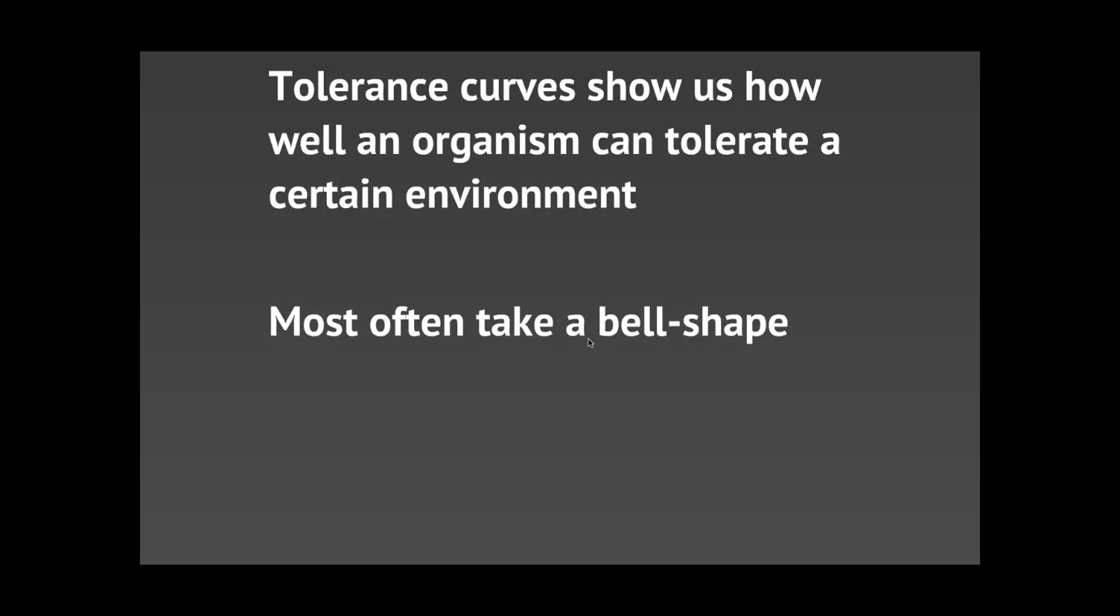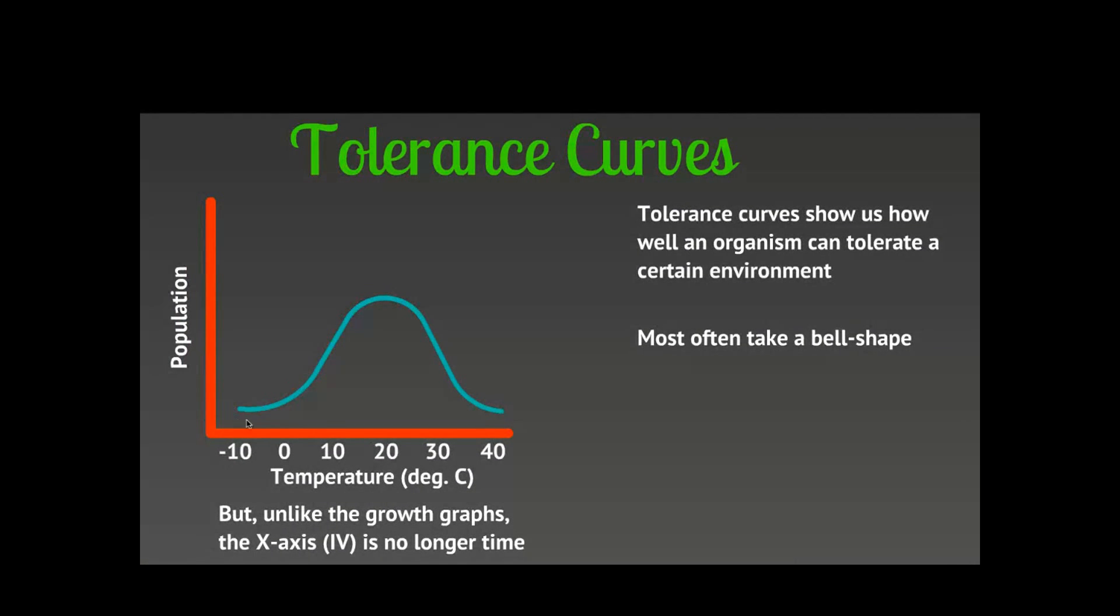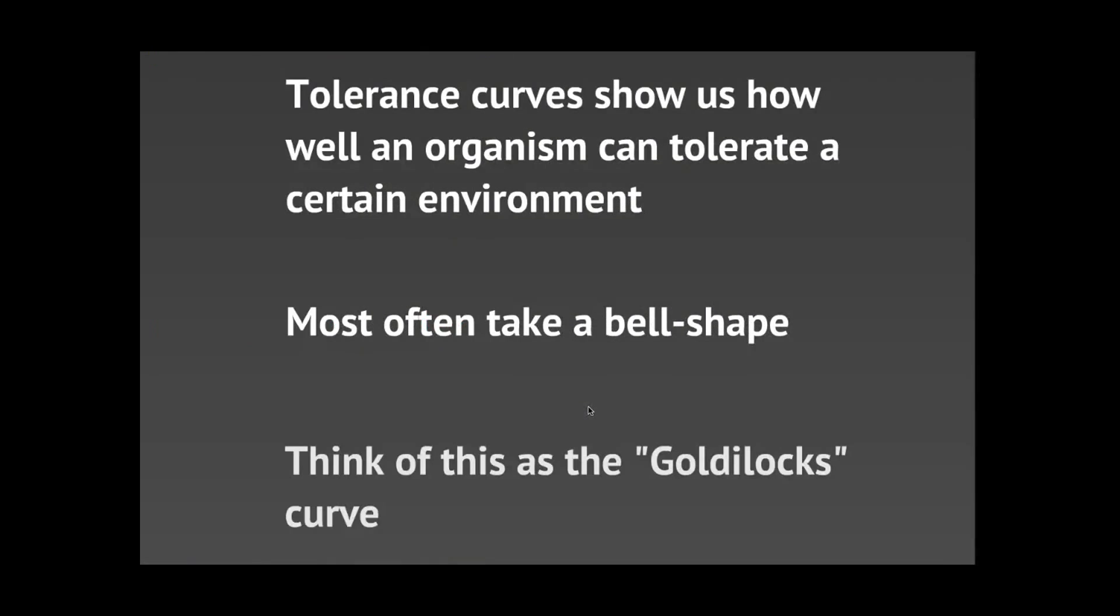They're showing you how well organisms can tolerate a certain environment or survive in a certain environment. And what you're going to see is they most often take the shape of a bell. So this graph over here we call this a bell-shaped curve. You can see it kind of looks like a bell that you would ring, with this big hump in the center and then it dips down to the left or to the right.